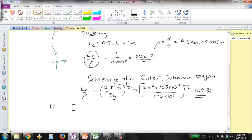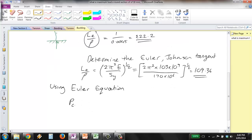Using Euler equation, the critical load Pcr is π² times E times I divided by LE², which in this case goes to 1.